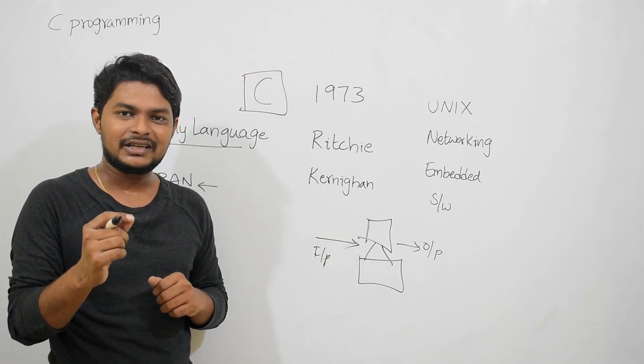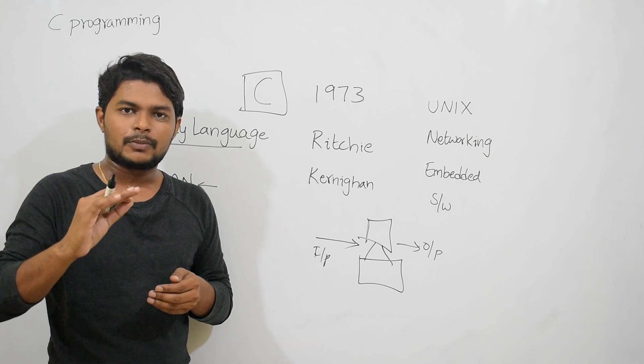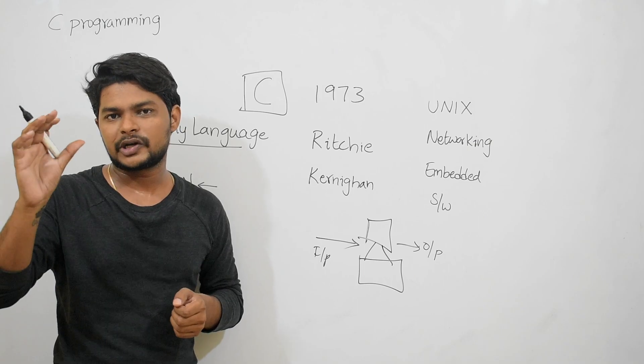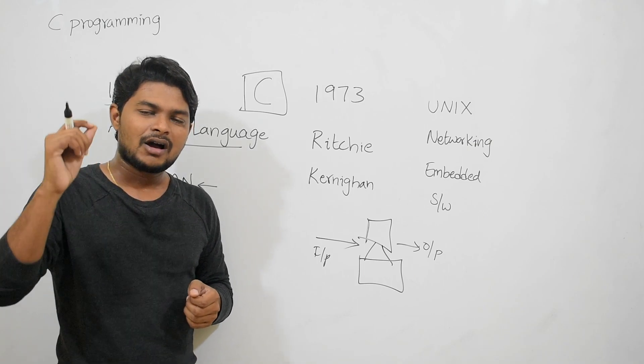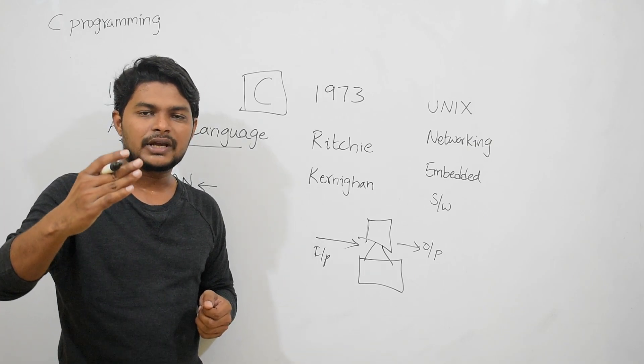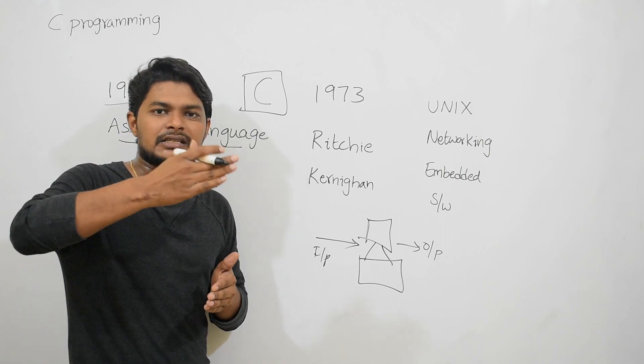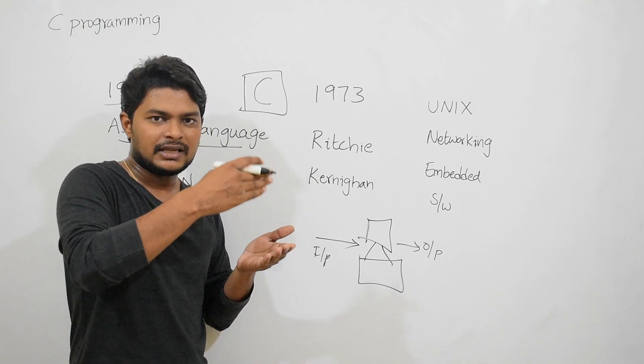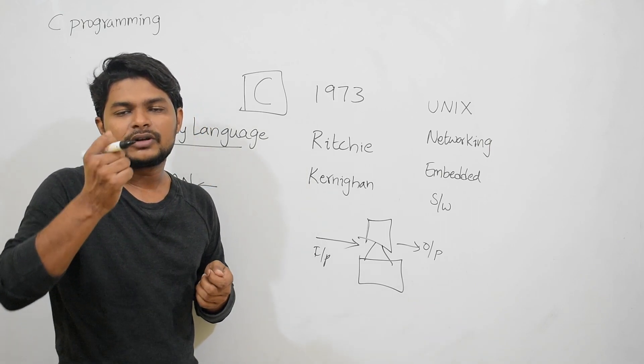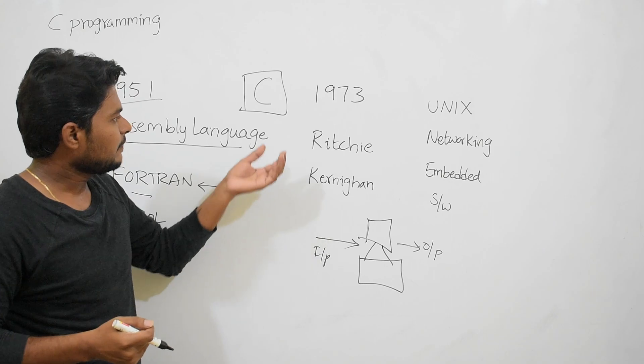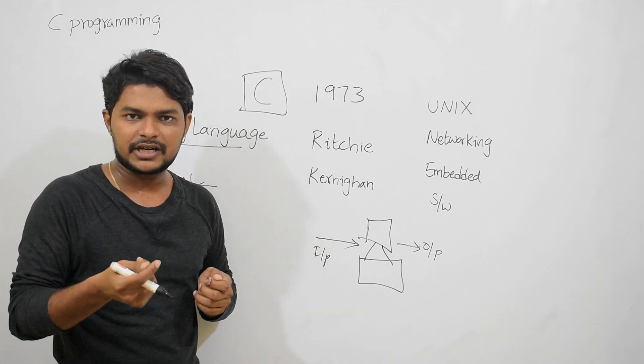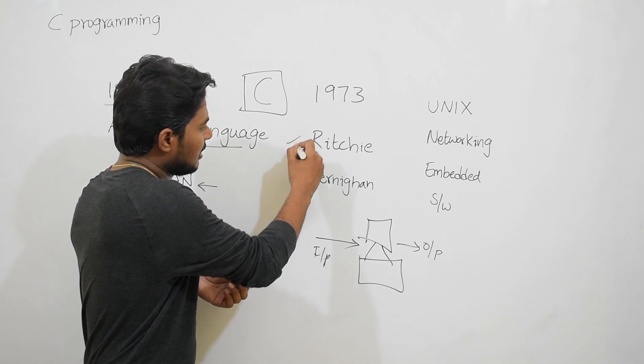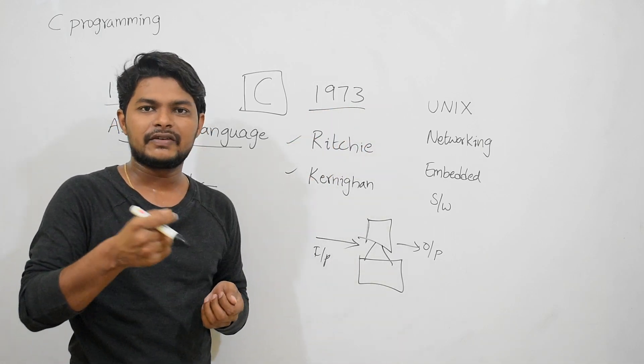Just like iPhone X was launched on a particular date - it's not like on that date it was actually created. Previously, three or four years back, R&D, designing, testing, everything takes place, then only they can release it. The same way, C language was tested and researched for about three to four years. Then these two people, in 1973, invented C language.